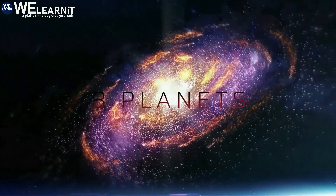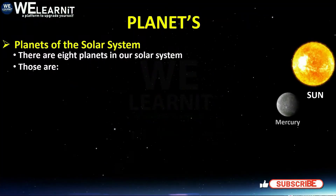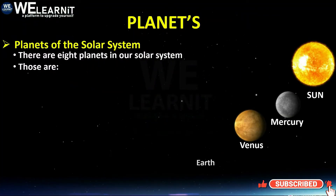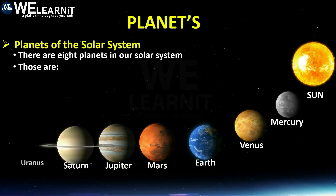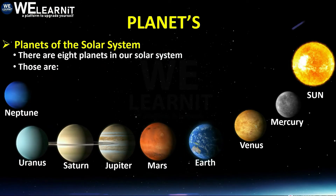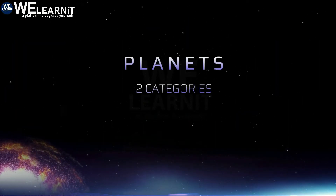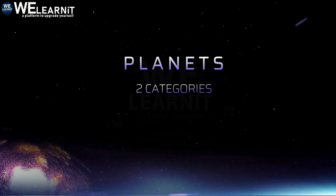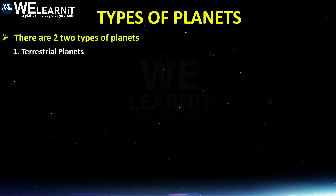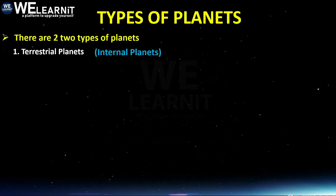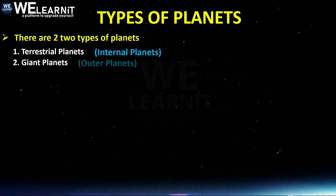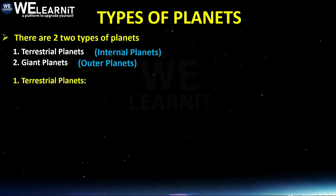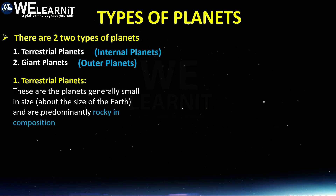Friends, we have eight planets in our solar system: Mercury, Venus, Earth, Mars, Jupiter, Saturn, Uranus, and Neptune. These planets have been divided into two categories: terrestrial planets, known as internal planets, and giant planets, known as outer planets.